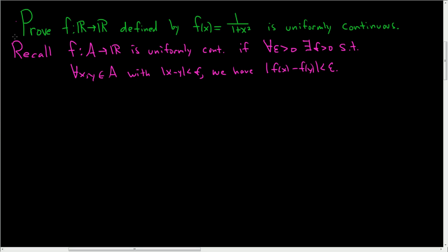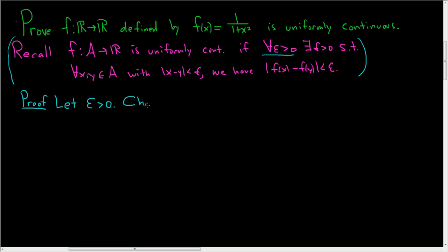I'll do that really quick, but hopefully it's just a quick refresher. So, proof. In order to start the proof, we have to use this definition. So we have to start by letting ε > 0. And then we have to find a delta. This is the part you usually figure out on your own on the side. Let's choose δ = ε/2.